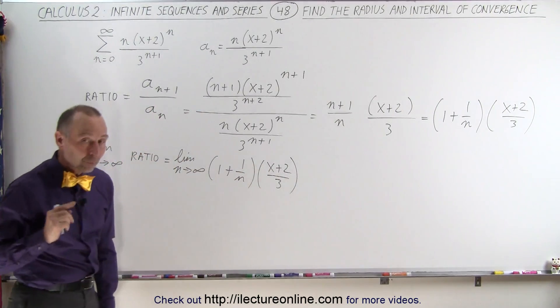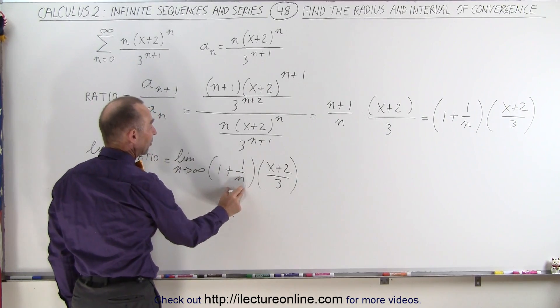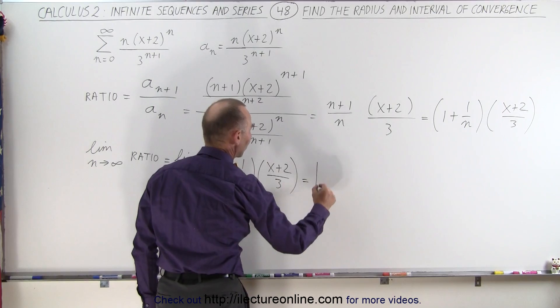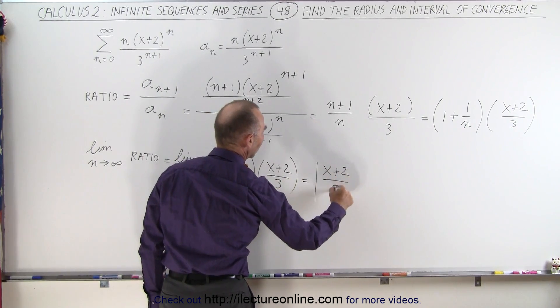Now when n goes to infinity, 1/n goes to 0, and we simply get 1 times this fraction, so this becomes equal to the absolute value of (x+2) divided by 3.